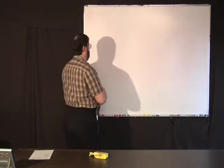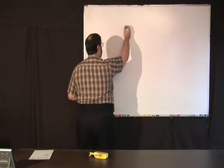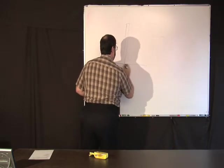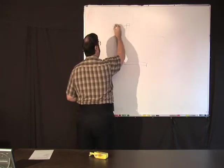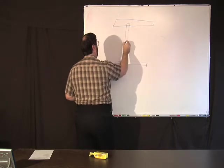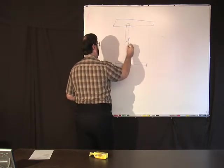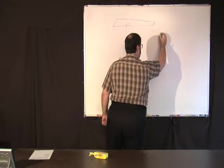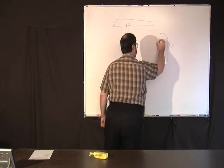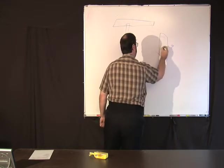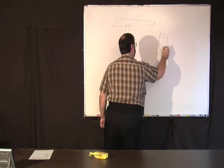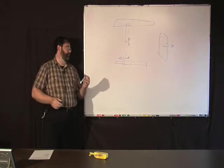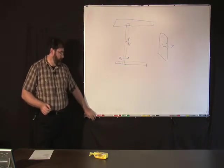The last type of near field range that is commonly used is called a planar near field range, where you basically have something that's on like a set of tracks so that the probe can move this way and this way. So you'll have an antenna out here and it'll scan a plane of points in front of the aperture that's a plane. We've talked about this before. And from that, you can compute the far field pattern.